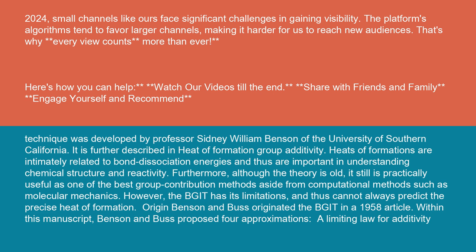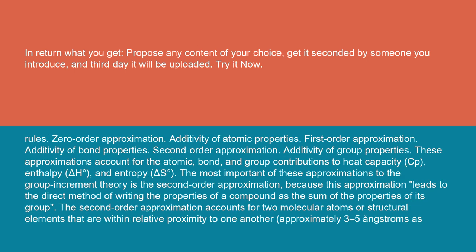Originally, Benson and Buss originated the BGIT in a 1958 article. Within this manuscript, Benson and Buss proposed four approximations: a limiting law for additivity, rules, zero-order approximation (additivity of atomic properties), first-order approximation (additivity of bond properties), and second-order approximation (additivity of group properties).